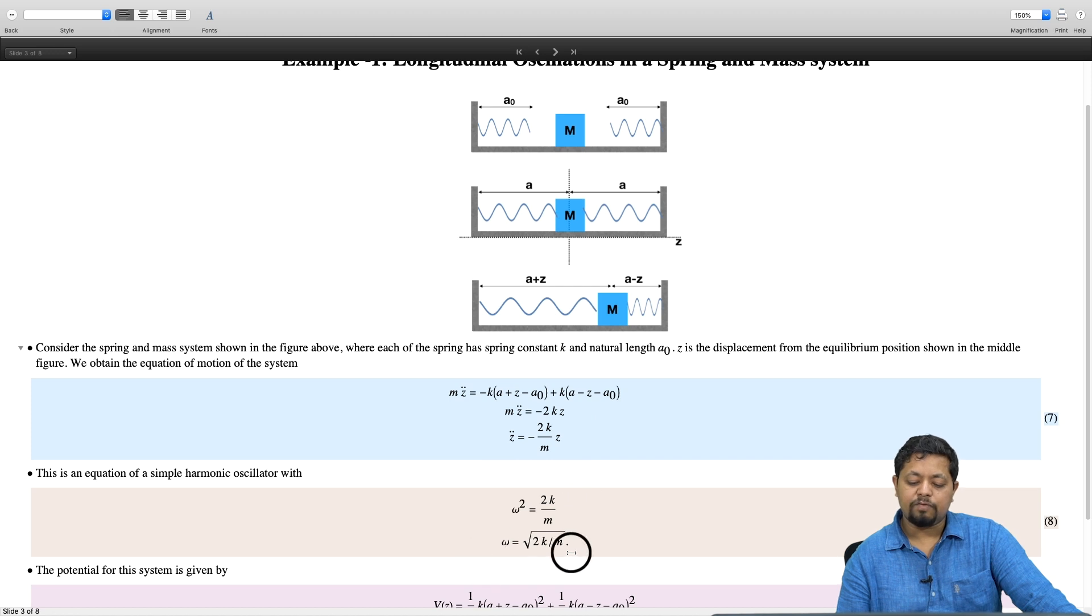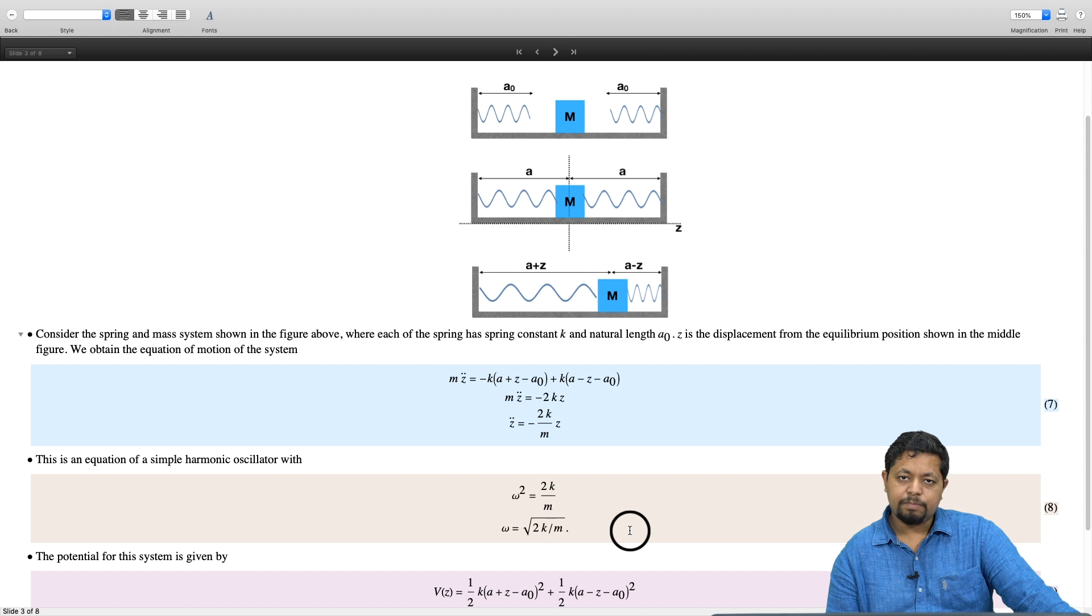Now, you know when a mass is attached to a perfect spring, an ideal spring, the oscillation frequency is square root k by m. In this case, there are two springs, so it ended up being square root of 2k over m.